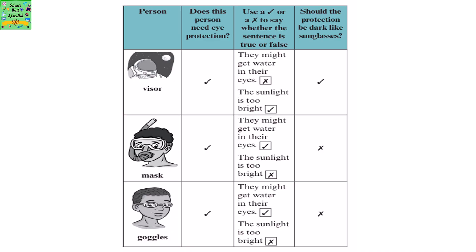Does a person wearing goggles need eye protection? Yes. Use a tick or cross to say whether the sentence is true or false. They might get water in their eyes — that's true, that's why they will need eye protection. The sunlight is too bright? No. Should the protection be dark like sunglasses? No, it does not have to be dark like sunglasses.